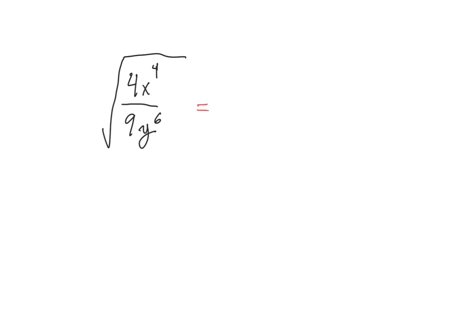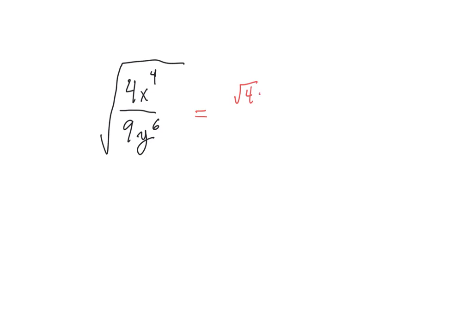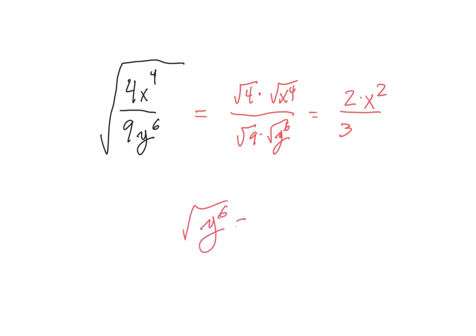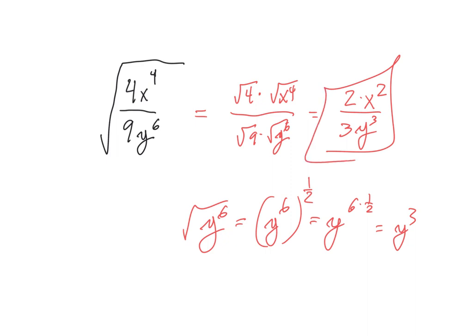Multiplying and dividing — if I multiply something many times, I can use exponents, and if I can use exponents, I can use roots. So I can split this entire thing up as the square root of 4 times the square root of x to the 4th, over the square root of 9 times the square root of y to the 6th. Square root of 4 is 2, square root of x to the 4th is x squared, square root of 9 is 3, and the square root of y to the 6th equals y to the 6th to the 1 half, which is y to the 3rd. So this would be 3y to the 3rd in the denominator.